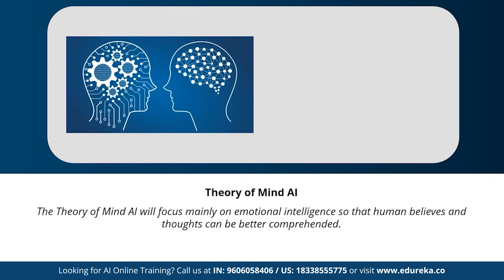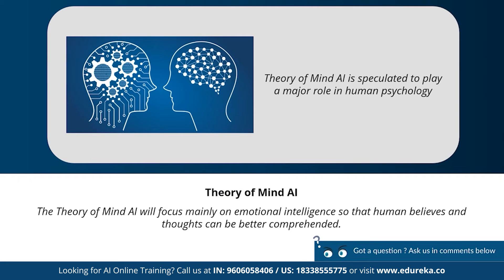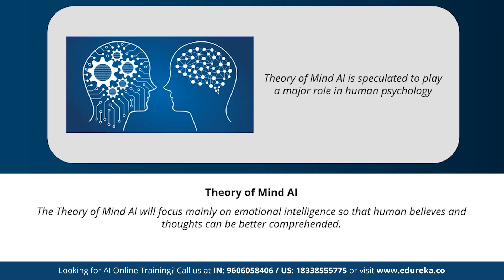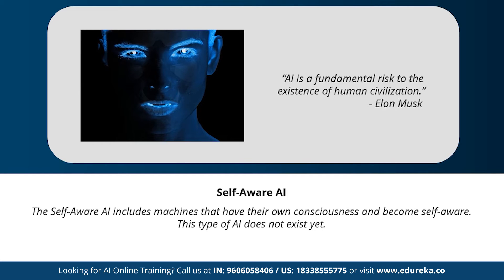The third type is theory of mind AI — a more advanced type speculated to play a very important role in psychology. This type will mainly focus on emotional intelligence so that human beliefs and thoughts can be better comprehended. Theory of mind AI has not been fully developed yet, but rigorous research is happening in this area. The fourth type is self-aware AI. Let's hope we don't reach the state where machines have their own consciousness. Geniuses like Elon Musk and Stephen Hawking have constantly warned us about the evolution of AI. Do you think we'll ever reach the stage of artificial super intelligence?